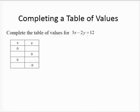So if 3x minus 2y equals 12 and we are told that x equals 0, then we would have 3 times 0 minus 2y is equal to 12. So that would be 0 minus 2y is equal to 12. 0 minus 2y is negative 2y. And dividing by negative 2, y equals negative 6.